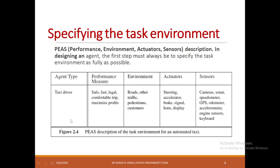Let us understand what is a task environment. Whenever you build an AI agent, it is going to operate in the environment and operates on the basis of rules set in the agent function. Specifying a task environment comes with four parameters: Performance, Environment, Actuators, and Sensors. Let us take an example — a taxi driver as an agent. Performances are: safety first, it should go fast, legally complete the trip, and maximize profit by finding the shortest distance to reduce fuel consumption, moving from source to destination without mistakes.